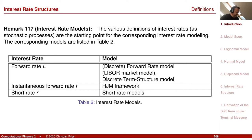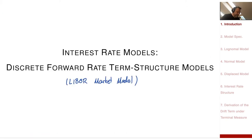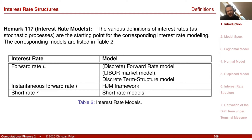Books on term structure models often start with short rate models, but I don't like this approach. Short rate models make strong assumptions — they write down the model directly under the equivalent martingale measure without making the transformation from the real measure. If you don't see this from the beginning, it can be a little disturbing.